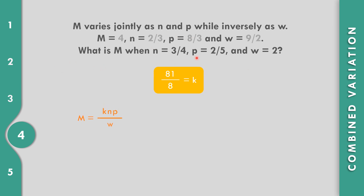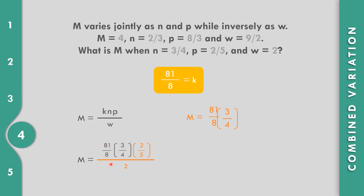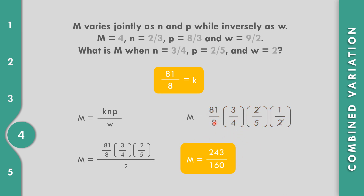Find m when n equals 3/4, p equals 2/5, and w equals 2, with k equals 81/8. Substituting: m equals (81/8) times (3/4) times (2/5) over 2. The reciprocal of 2 is 1/2. Cancel 2 in numerator and denominator. Multiplying: 81 times 3 times 1 equals 243, and 8 times 4 times 5 equals 160. So, m equals 243 over 160.